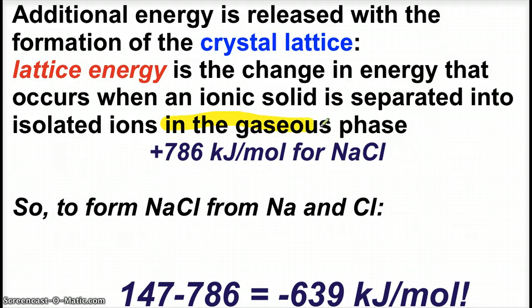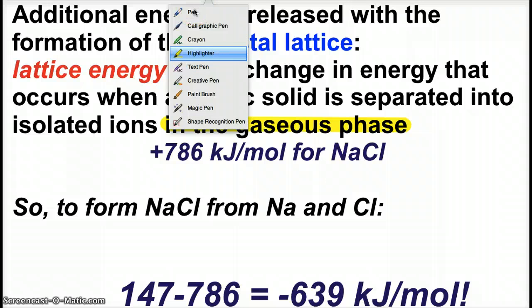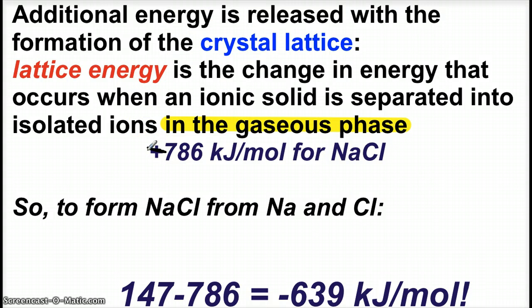So, much like when we looked at ionization energy, we had to look at the removing of an electron from a gaseous element. Lattice energy is how much energy it takes to take a crystalline solid, an ionic solid, separated into the ions in the gaseous phase. So, 786 kilojoules per mole it takes for sodium chloride. The opposite of that, the negative of that, if that was negative, that would be the formation of the compound, the crystal lattice energy. And we'll see that here in a minute.